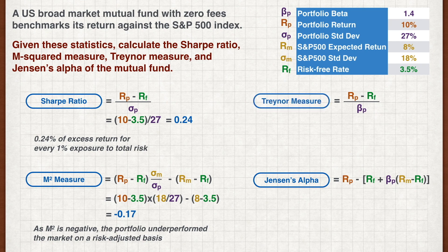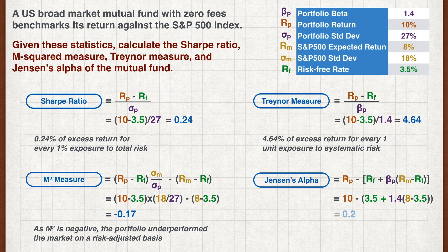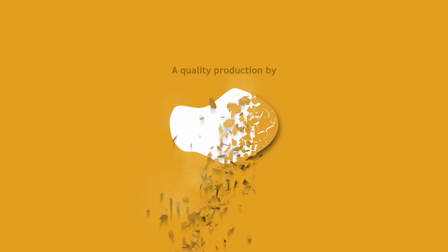The Treynor Measure is 4.64, meaning we get 4.64% excess return for every one unit of beta representing systematic risk. Jensen's Alpha is 0.2%, meaning the portfolio performed 0.2% above what is expected. Interestingly, based on systematic risk only, the portfolio outperformed, while based on total risk, the portfolio underperformed the market.